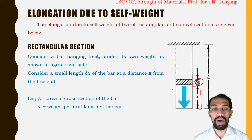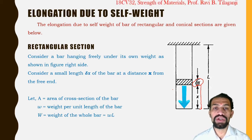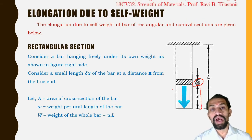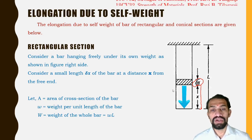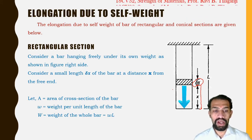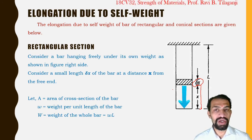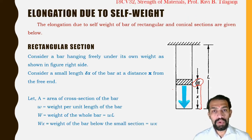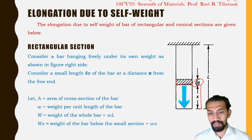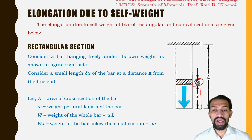Capital W is the weight of the whole bar, so capital W equals w·L. Small w is only the weight per unit length. W·x (capital W·x) is the weight of the small section — we consider w into x for the derivation.